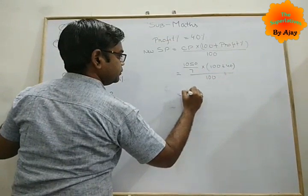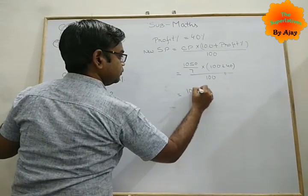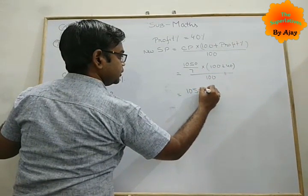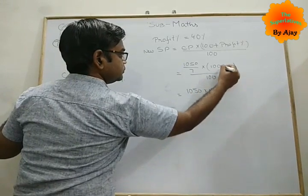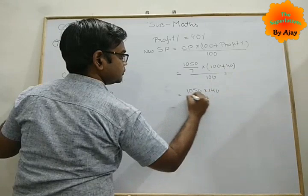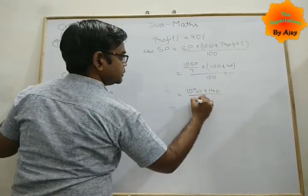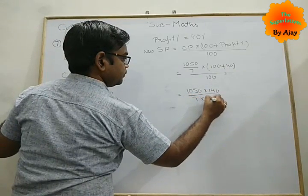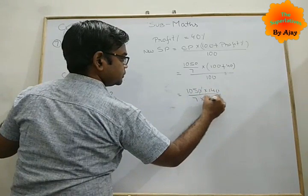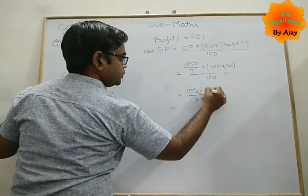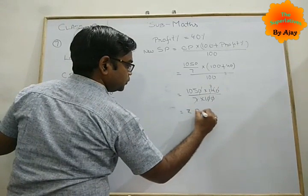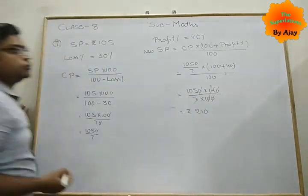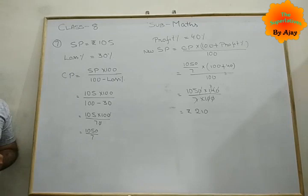When we simplify, 1050 into 140 by 7 into 100. First we remove the 0, then 7 cuts up, it's 210. This is your solution for question number 7.